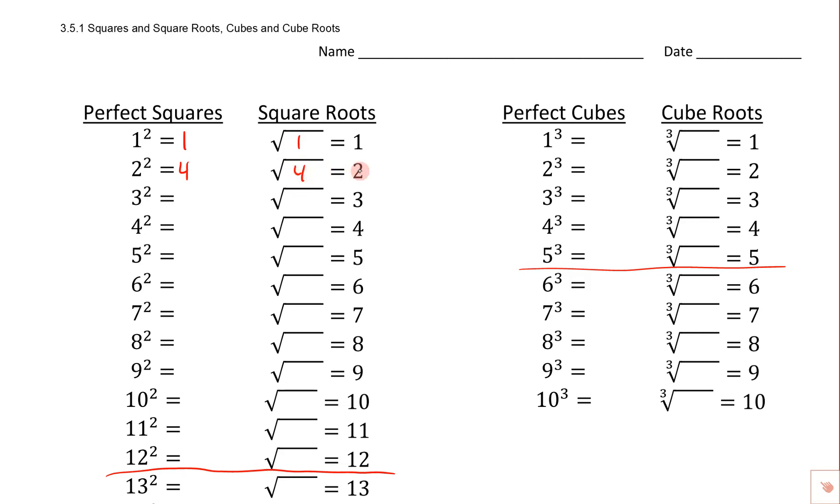The square root of 4 is 2. So you'll notice that when we square something, we get this bigger number right here, and when we take the square root of that, we get right back to the same number that we started with.